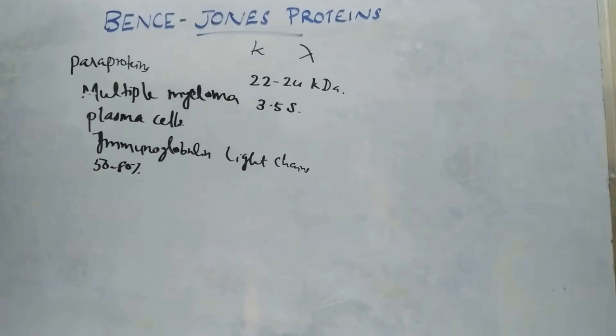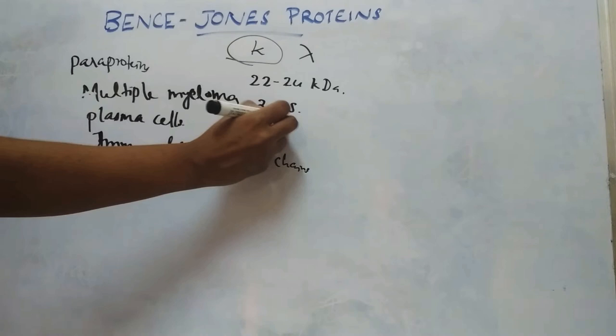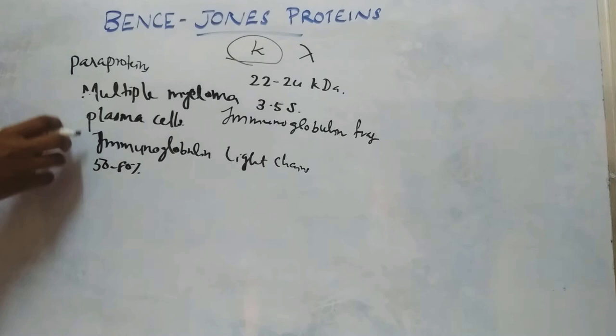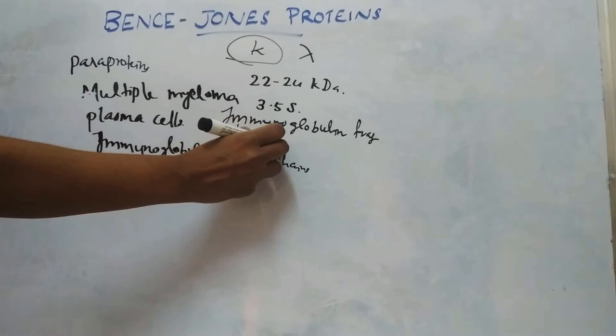These light chains can be kappa or lambda. Most of the time, this may be kappa. These light chains may be immunoglobulin fragments or single homogenous immunoglobulins. Sometimes, the chains excreted may be a dimer of these light chains.